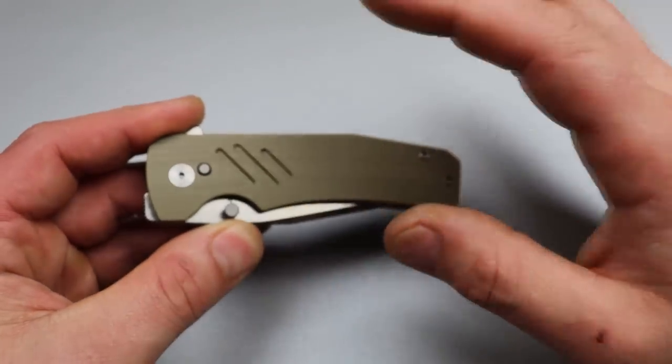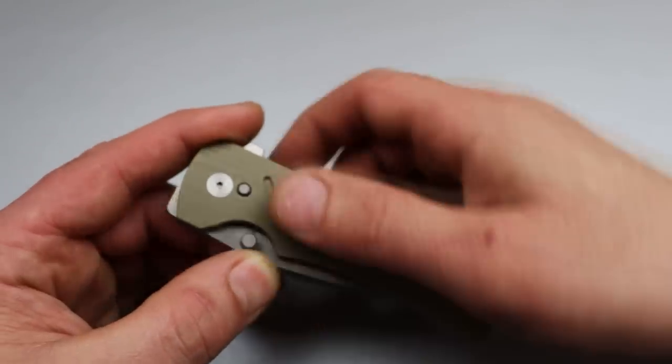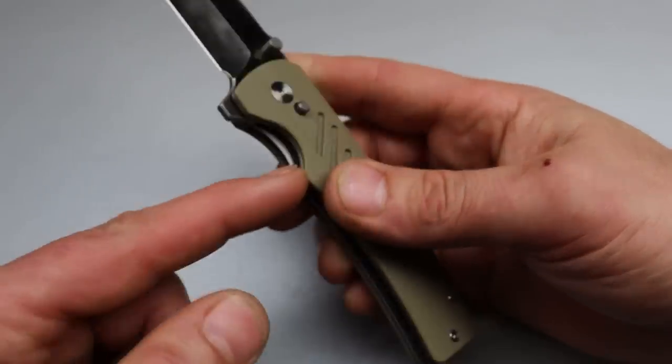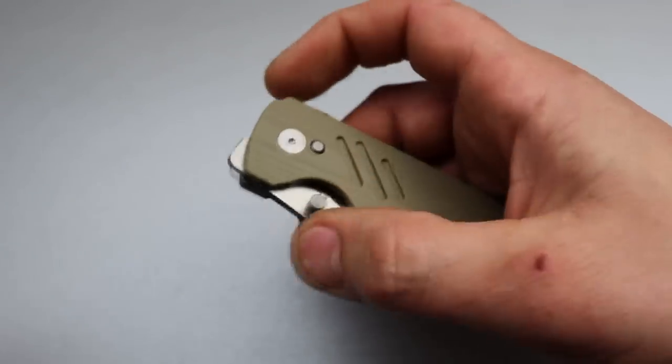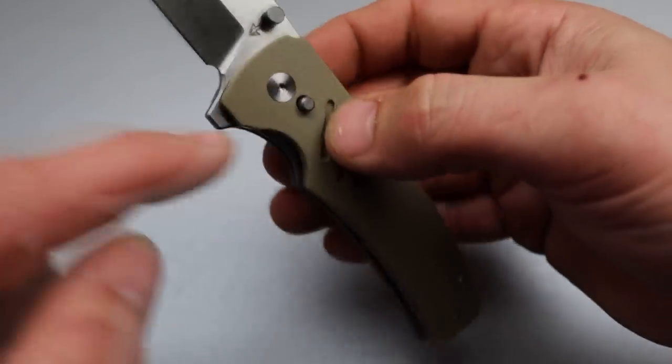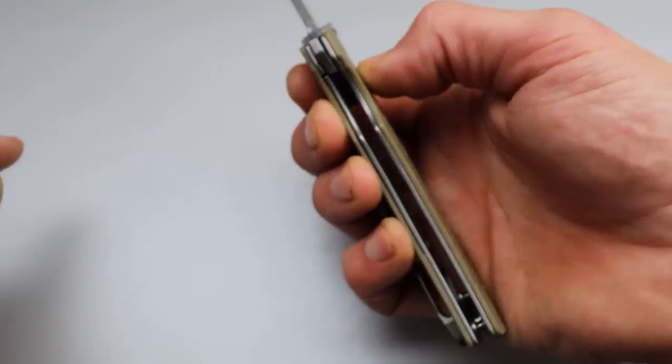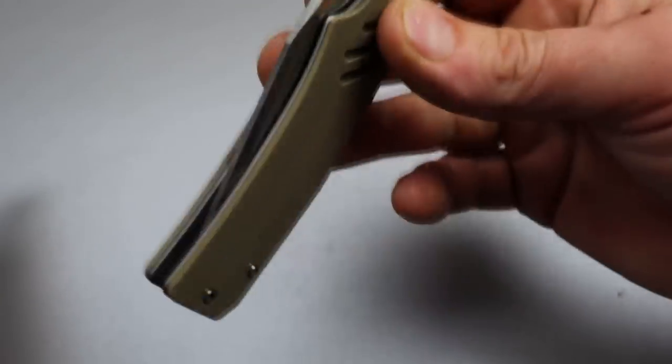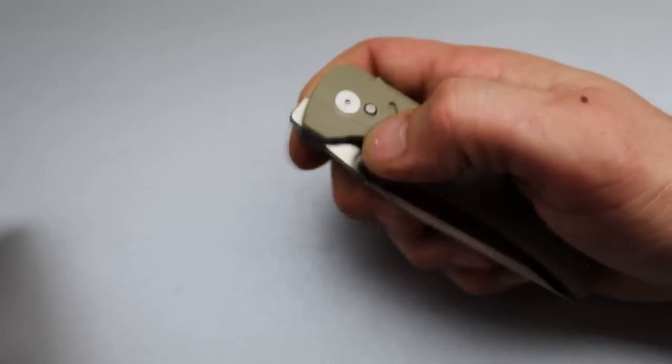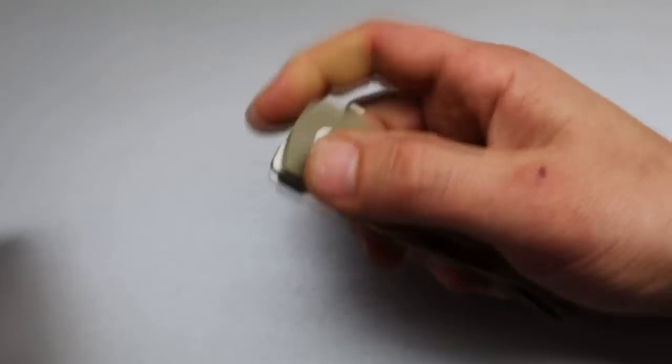Now where this thing is cool is it has a button lock and a liner lock. So you don't really see this too often. I know Spyderco has done it with their compression lock, but you basically, you can push the button, which pushes the liner over. So it's a button lock, or if you want to use it like a liner lock, you absolutely can.